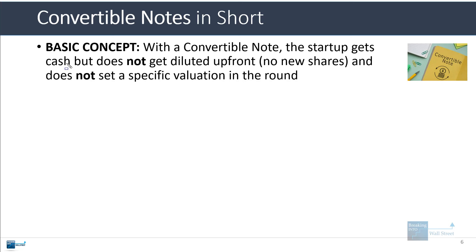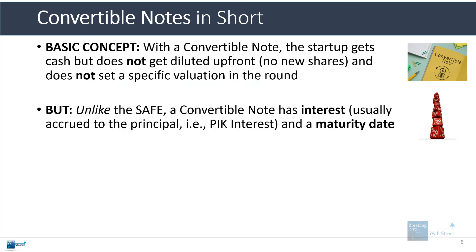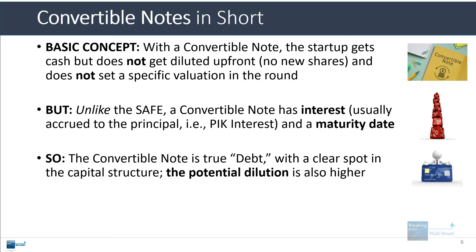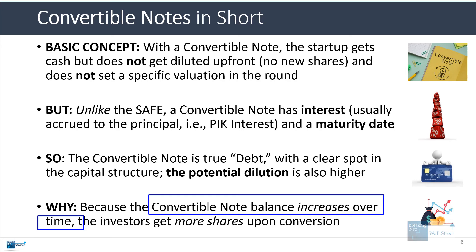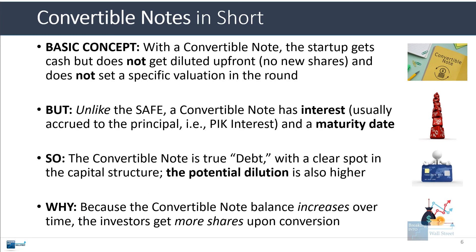Just like with a safe note, there is no specific valuation set in this round. Unlike the safe note though, a convertible note has interest attached. Normally this interest is accrued to the loan principle, sort of like paid-in-kind or PIK interest in a leveraged buyout. And there is a maturity date as well. So a convertible note is true debt — it has a clear spot in the capital structure, a higher claim to the assets than the equity investors, even the preferred equity investors. The potential dilution is higher because the convertible note balance typically increases over time as a direct result of the accrued interest, which means convertible note investors potentially get more shares upon conversion.